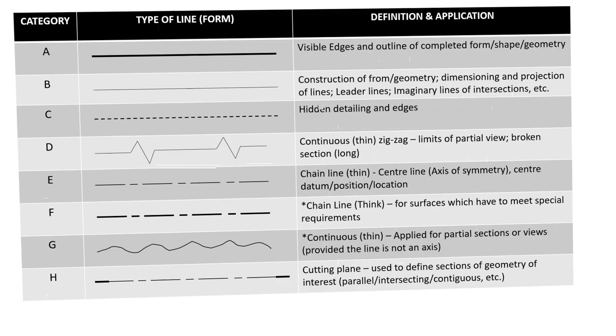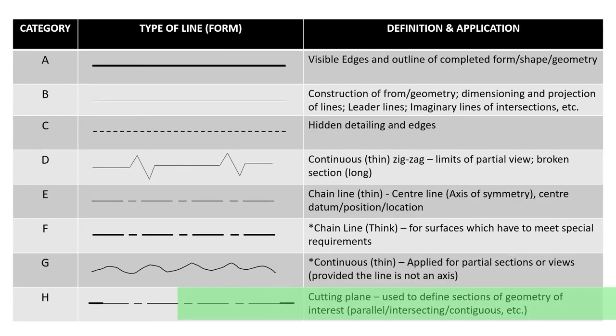And the last we will be using down the line will be category H. This is basically a line form that represents cutting planes. If you wanted to look at a cross-sectional view of a given geometric form of interest, this is basically the type of line that needs to be used to show the adjacent view in the other view in terms of what is the nature of the internal architecture of the given form.